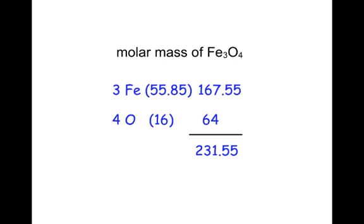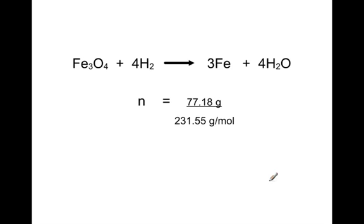So our final molar mass is 231.55 grams per mole. So now we can plug that into our formula. We already knew the 77.18 grams of the iron oxide, and we divide it by its molar mass. This gives us a grand total of 0.333 moles of the iron oxide.